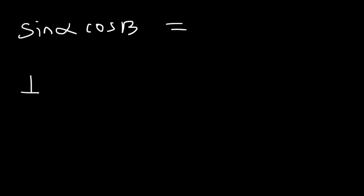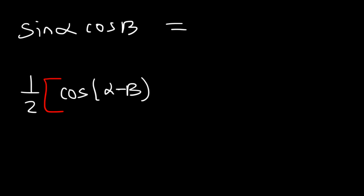Now let's review the product-to-sum formulas. Here's the first one: sine alpha cosine beta is equal to one half times cosine(alpha minus beta) minus cosine(alpha plus beta). So that's the first one we need to know.